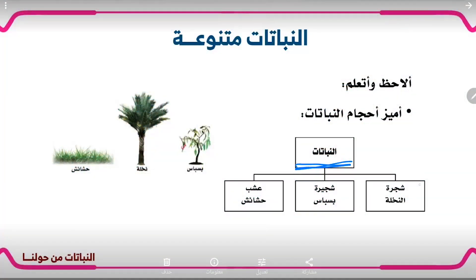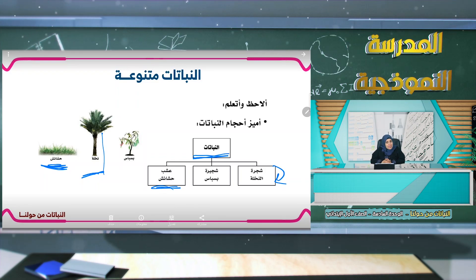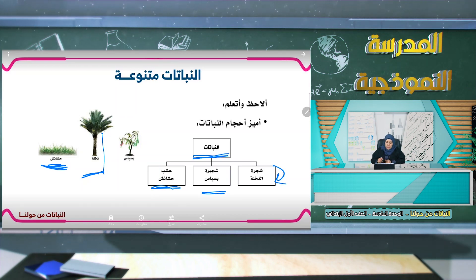النباتات متنوعة ومختلفة؛ فهناك نباتات كبيرة وهناك نباتات صغيرة. سوف نتكلم اليوم عن حجم النباتات. النباتات قد تكون شجرة مثل النخلة، وقد تكون شجيرة أي أصغر بالحجم مثل البسباس أو الفلفل، وأيضاً هناك الحشائش مثل العشب.